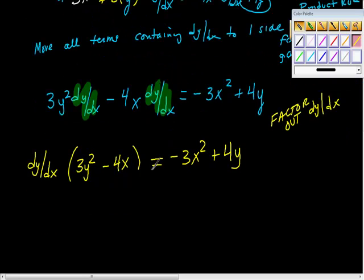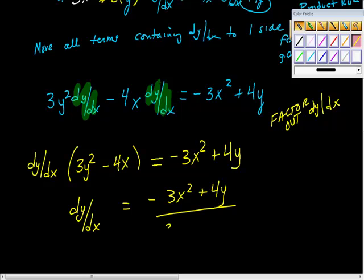Now, remember, our goal is to get dy/dx, right? That was our goal at the beginning. So what would you do? You'd divide by this. You'd say this, that dy/dx is equal to negative 3x² plus 4y all over 3y² - 4x.